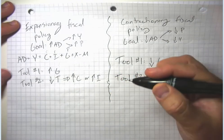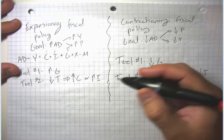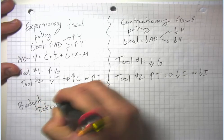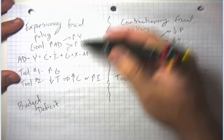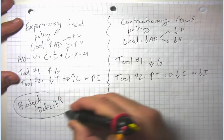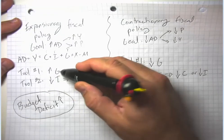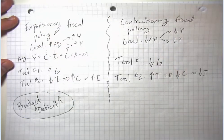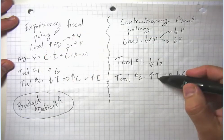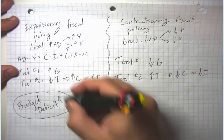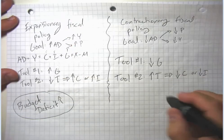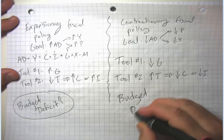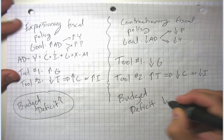Often the government is doing multiple things with taxes and spending simultaneously. Another way of looking at this: if we want to increase aggregate demand, we want to increase the size of our budget deficit. That either means taxes fell by more than government spending fell, or government spending rose by more than taxes rose. So an increase in the budget deficit is expansionary fiscal policy, and a falling budget deficit corresponds to contractionary fiscal policy.